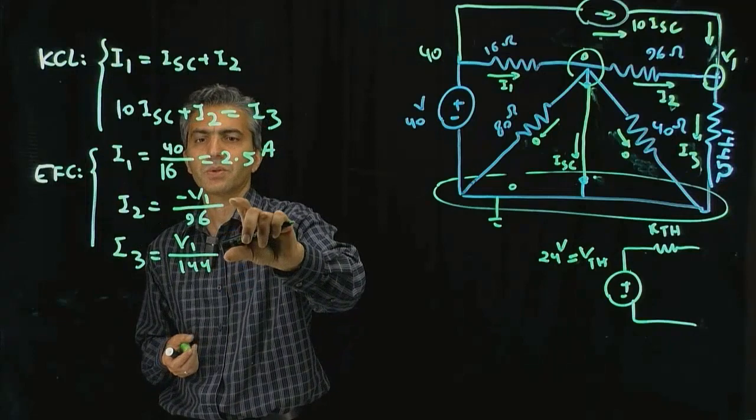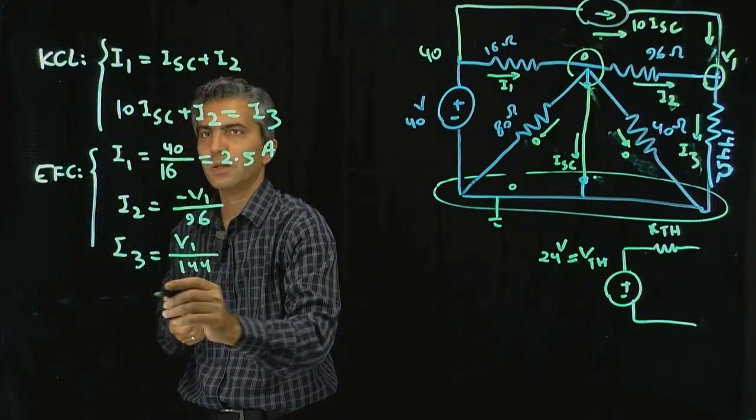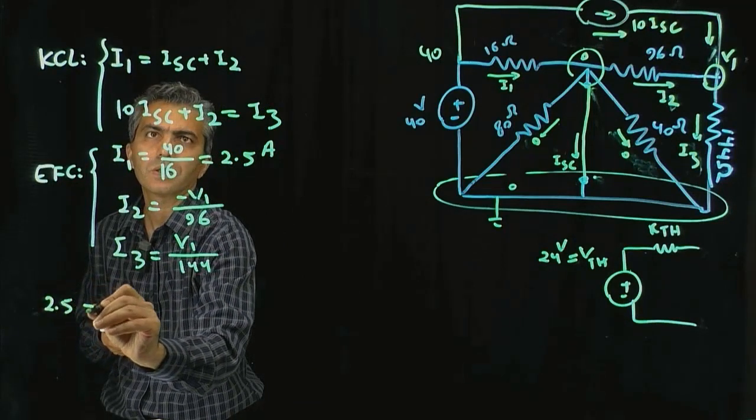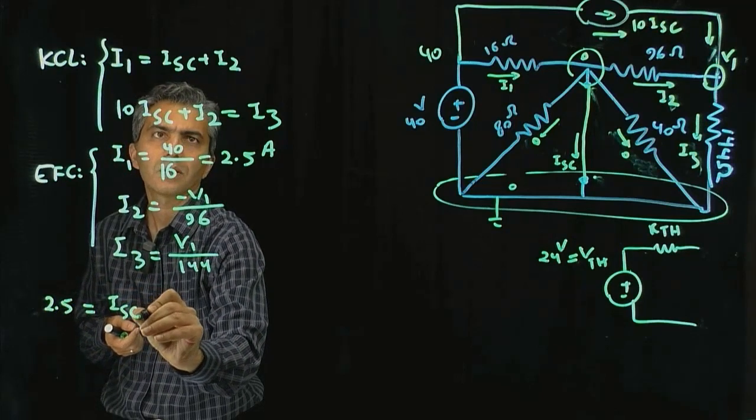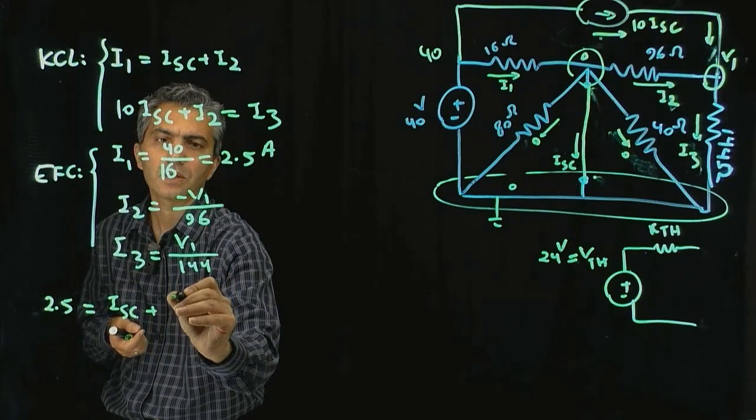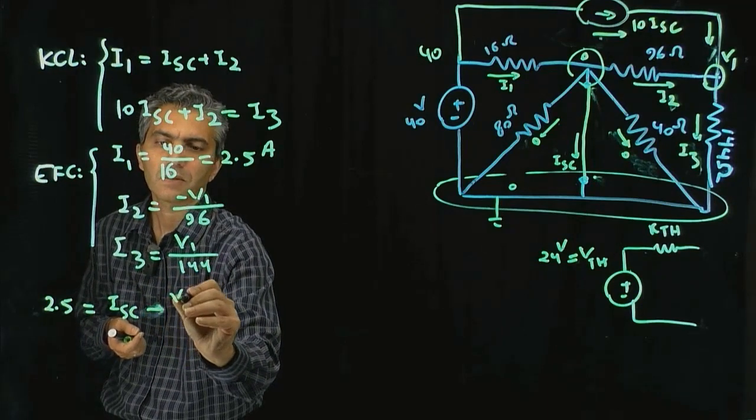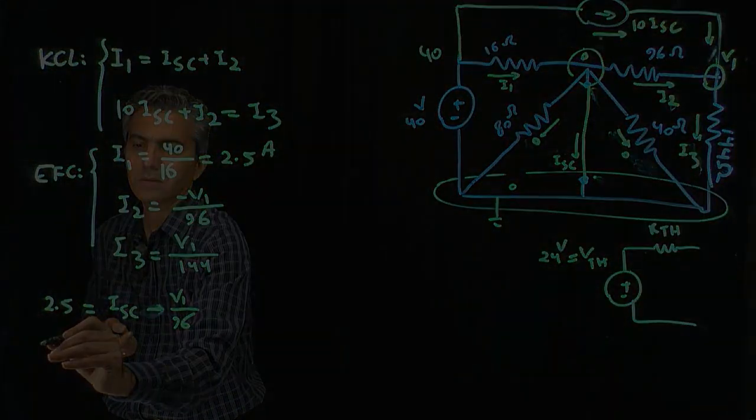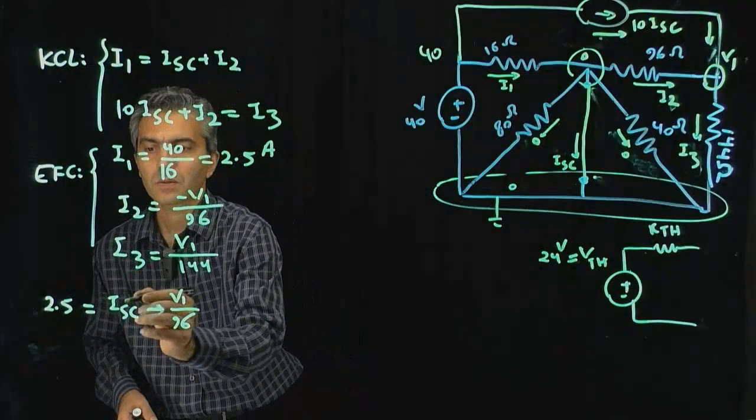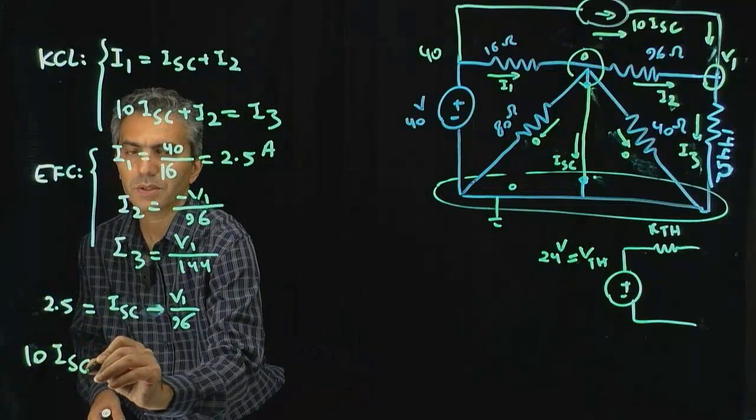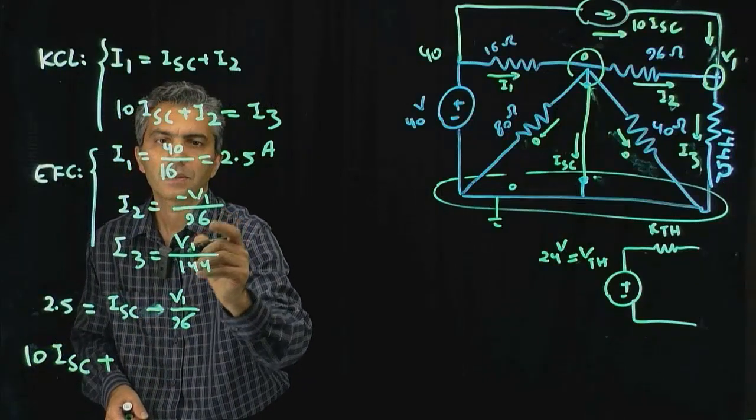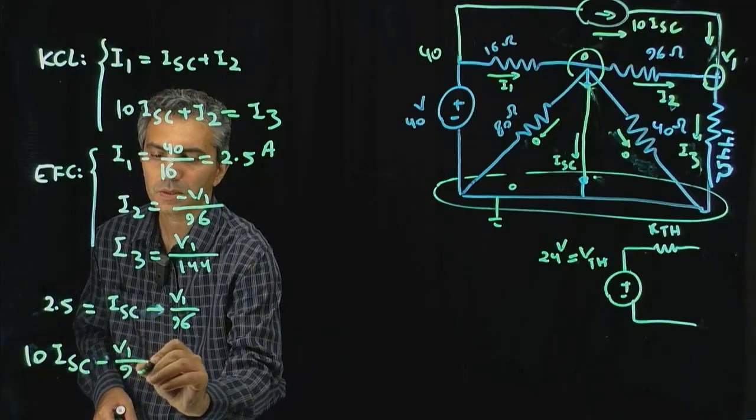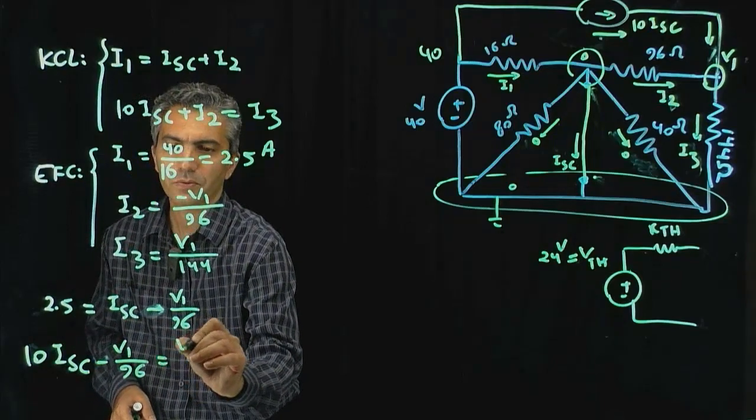Now I can put these equations back in there. 2.5 is equal to I short circuit plus I2, which is minus V1 divided by 96. And then 10 times I short circuit plus minus V1 divided by 96 is equal to V1 divided by 144.